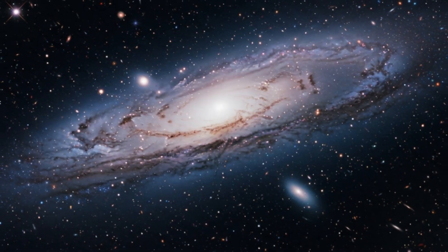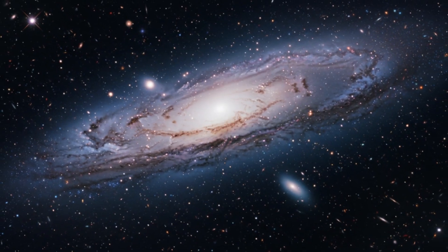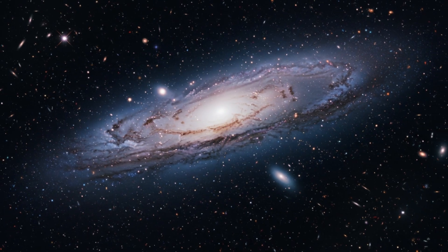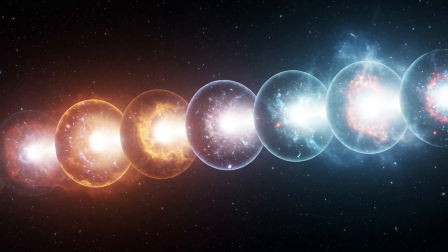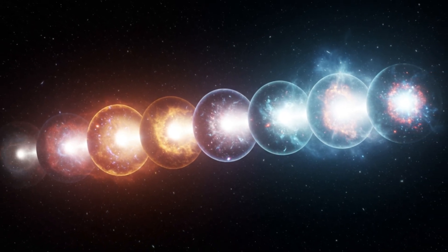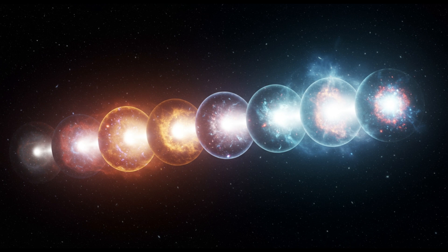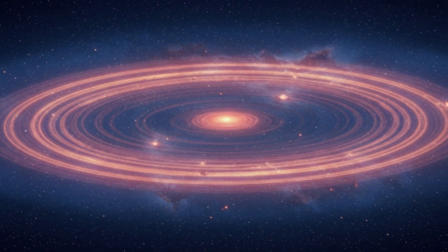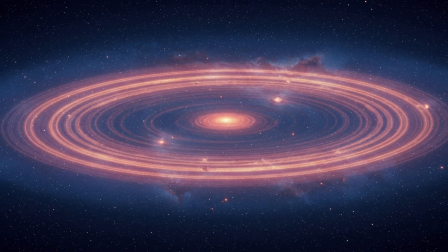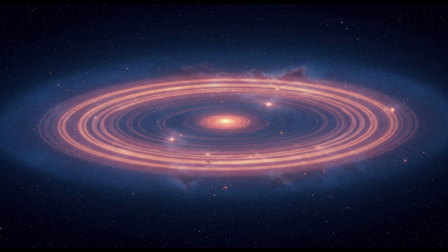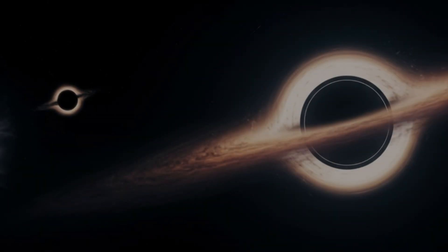If these galaxies formed faster, earlier, and with more structure than we predicted, then the early universe wasn't a dark age. It was a revolution. Rapid. Explosive. Almost as if it was trying to organize itself. The rules we thought governed the young cosmos—slow formation, gradual development, simplicity—had been replaced by a new picture. One of fierce creation. Of rapid chemical cycles. Of galaxies that seemed to remember things they shouldn't.